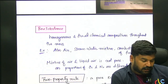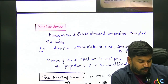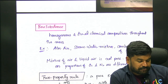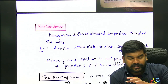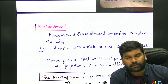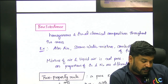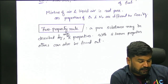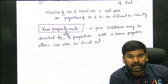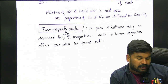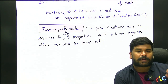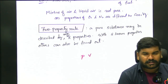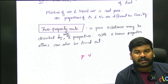Pure substance is also covered. Pure substance means chemical composition is fixed and homogeneity is fixed. And we will talk about two property rules. For example, P and V specify the P and V combinations.